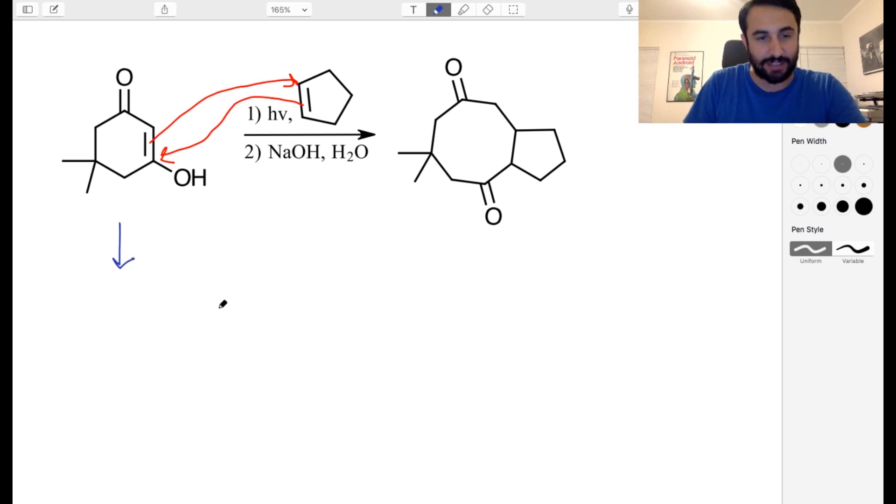This is exactly how we get thymine dimers in DNA, by the way, from UV light. So this is all going to stay the same. And we've got our methyls right here. And what we're going to get is a four-membered ring right there. And then here's the rest of that five-membered ring.